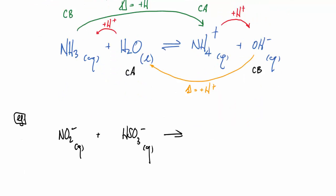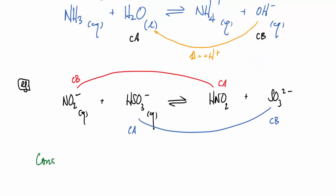Here's another example with nitrate ion and bisulfite ion doing an equilibrium here forming nitrous acid and sulfite ion. So let's have a look and see if we can find the conjugate acid-base pairs. Here nitrous acid and nitrate ion form a pair and so do bisulfite ion and sulfite ion.